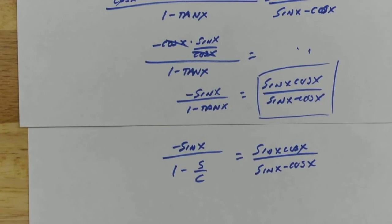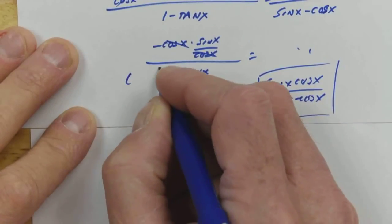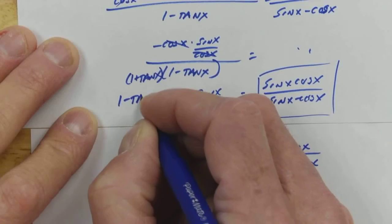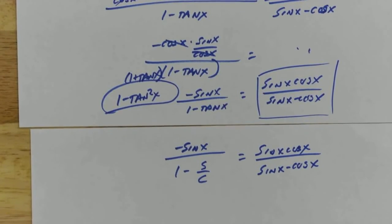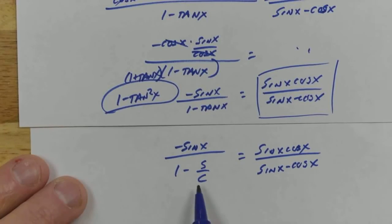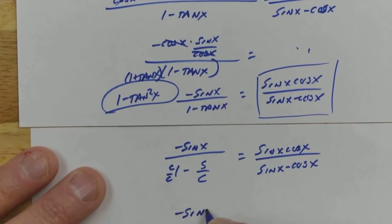Do you think you can multiply 1 minus tangent by the conjugate? If I multiply those two together, you get 1 minus tangent squared x, which doesn't equal anything. 1 plus tangent squared x gives me something. Can you turn the 1 into cosine over cosine so it's equal to 1? Exactly. So this would be cosine over cosine.